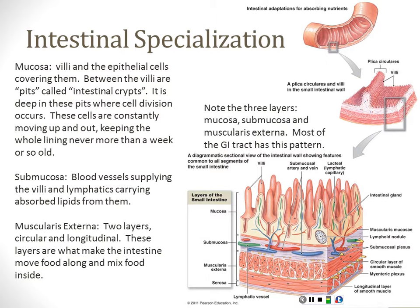Cells divide in the crypts and work their way up, so the oldest cells are at the tips of the villi. By the time they get to the tips they're past their lifespan — they die and are shed into the intestinal lumen. Our bodies, being excellent recyclers, digest them and absorb the nutrients they contain along with the food we eat. So we're not losing any raw materials.